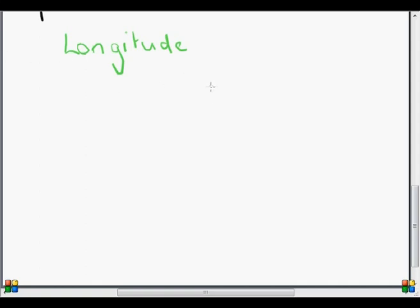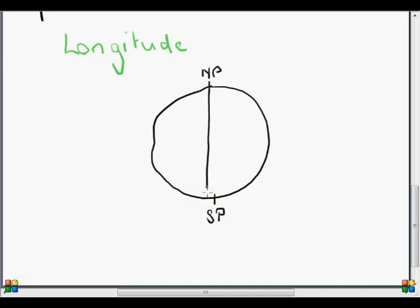If I draw the Earth as a sphere, and again we have the North Pole and the South Pole. Now the North Pole and the South Pole of course are the ends of the Earth's axis. So through the middle of the axis we have an imaginary straight line. And again we have the centre of the Earth.